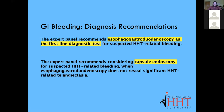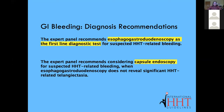The guidelines panel also made a second recommendation: when to consider capsule endoscopy. Unlike the EGD, capsule endoscopy is a swallowed camera — like a big pill that takes photos all the way through the stomach and bowels. The expert panel recommended using capsule endoscopy when HHT-related GI bleeding is suspected but the first-line EGD didn't show much. The search shouldn't stop at a negative upper scope — it should then be followed by a capsule endoscopy.